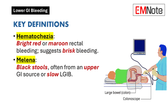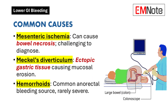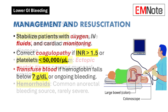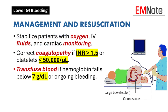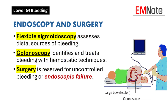In summary, lower GI bleeding can manifest as bright red blood, maroon blood, clots, or black tarry stools. Sometimes bleeding may be occult, presenting as anemia without visible blood in the stool. Common causes include diverticular disease, hemorrhoids, anal fissures, inflammatory bowel disease, polyps, and colorectal cancer. Initial management often involves resuscitation with fluids and blood products, as well as diagnostic tests like colonoscopy or angiography. Treatment options may include endoscopic therapies, medications, or surgery, depending on the specific circumstances.